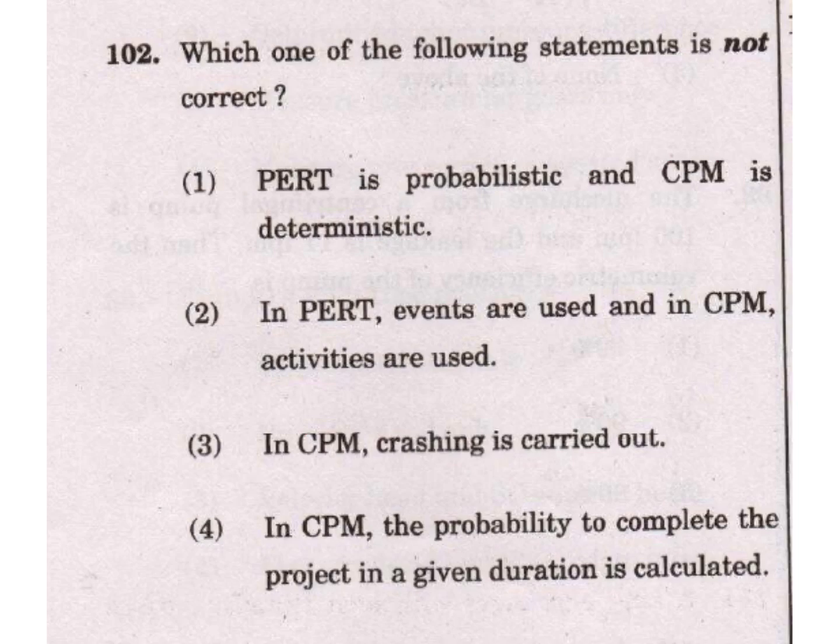Question 102: Which one of the following statements is not correct? One, PERT is probabilistic and CPM is deterministic - this is correct. Two, in PERT events are used and in CPM activities are used - also correct. Three, in CPM crashing is carried out - yes, correct. Four, in CPM the probability to complete the project in a given duration is calculated - this is not correct. So 4 is our answer.